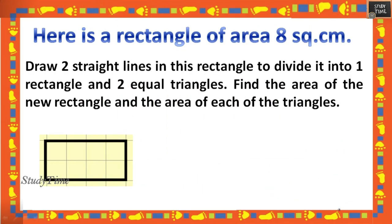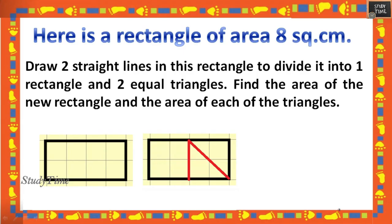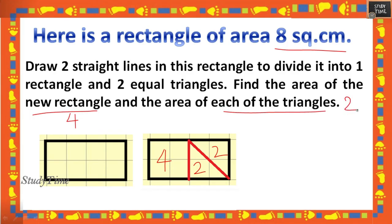A rectangle has area 8 square centimeters. Draw two straight lines to divide it into one rectangle and two equal triangles. Find the area of the new rectangle and each triangle. The new rectangle has area 4 square centimeters, and each triangle has area 2 square centimeters. Always make sure to write the unit 'square centimeter' — that is very important.